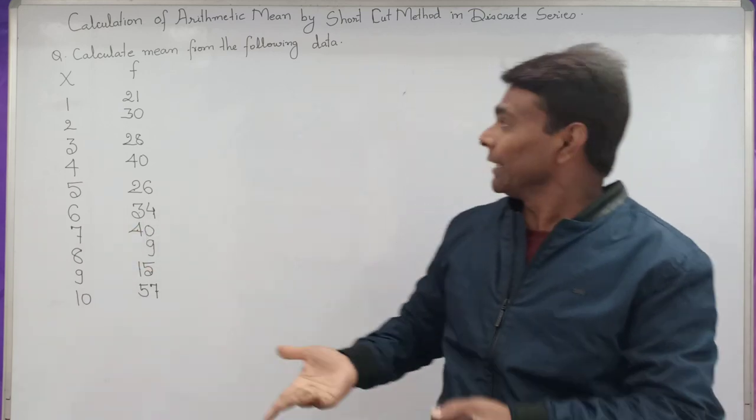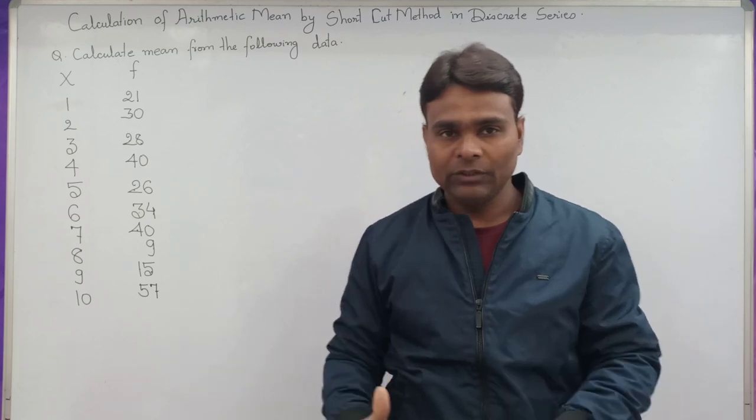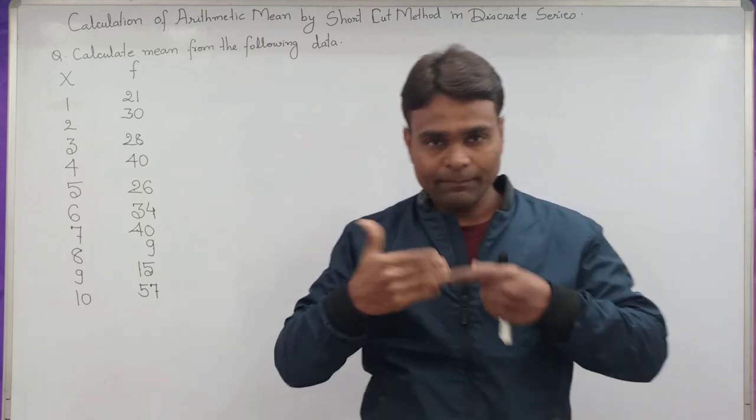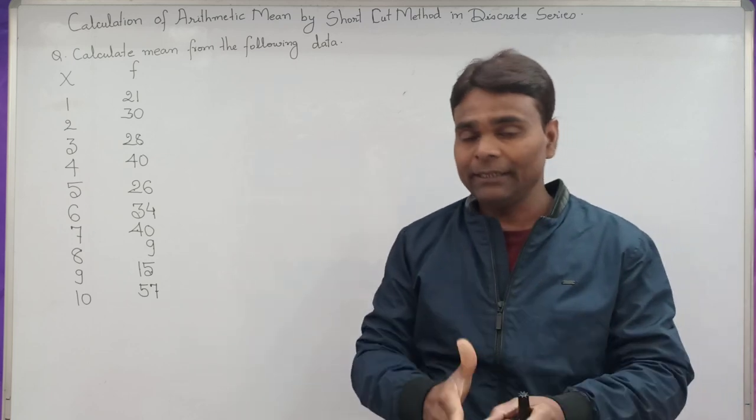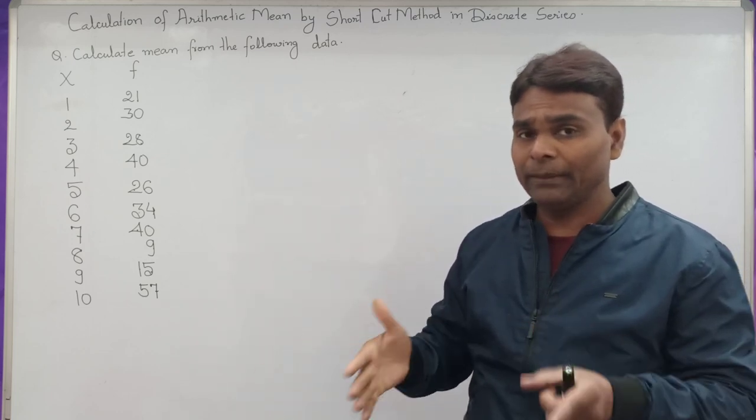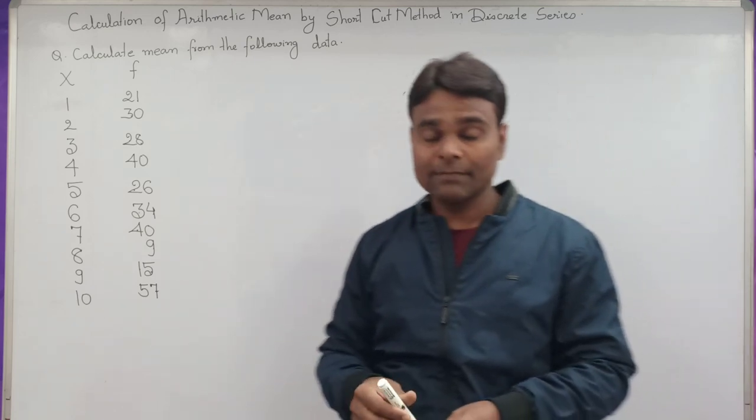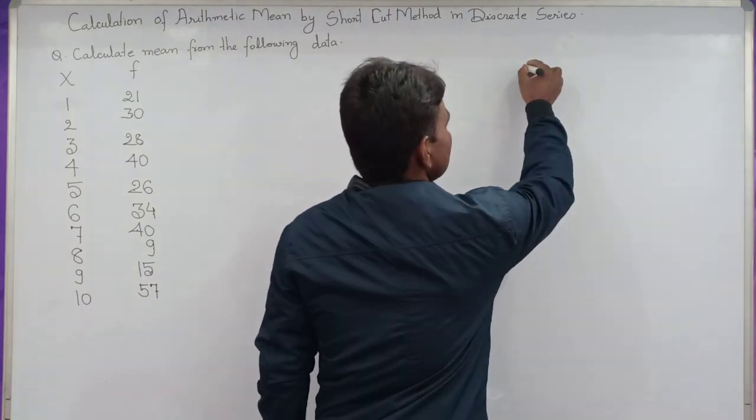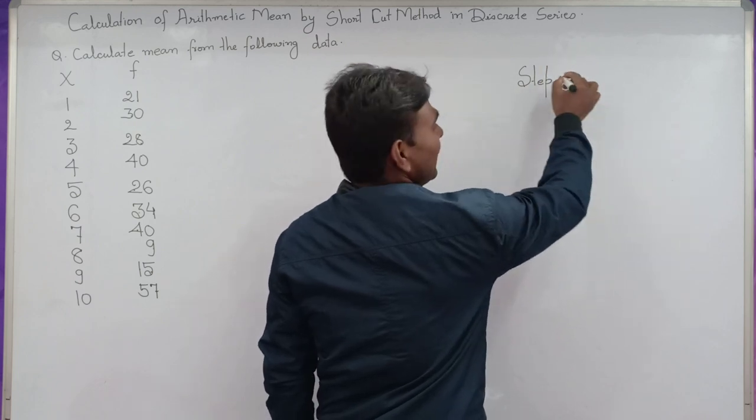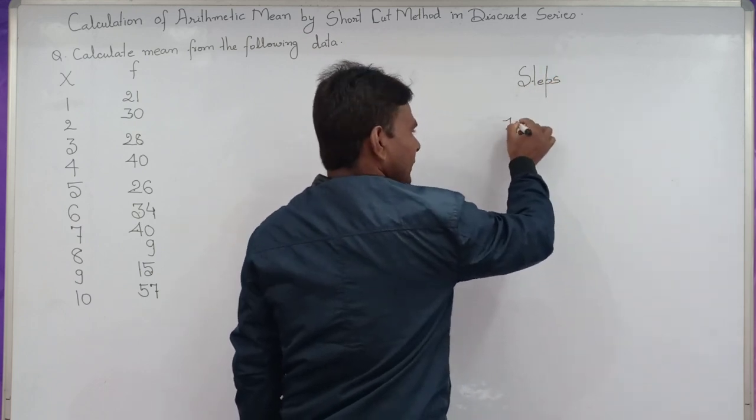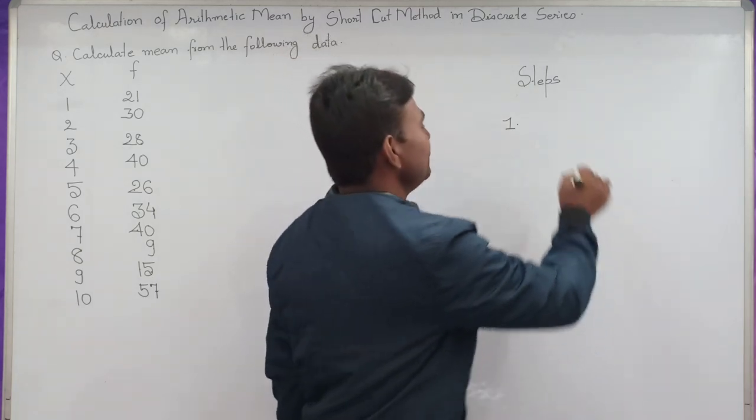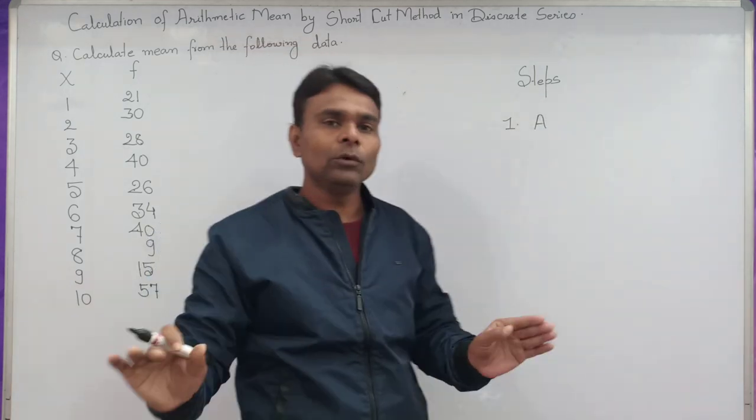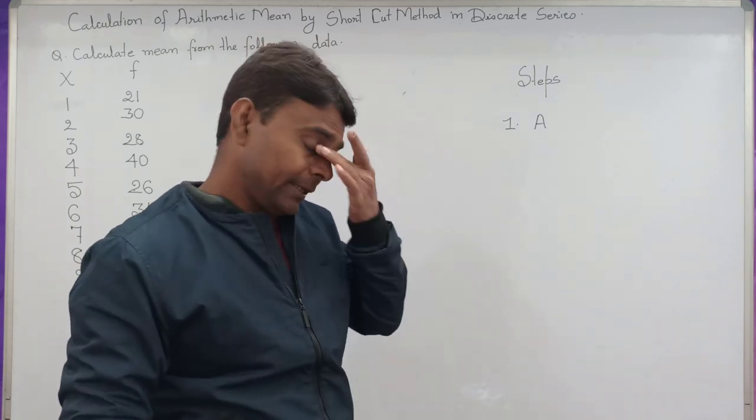The data is given here. So in this video we will learn how to calculate the mean by shortcut method. We will also learn how to calculate arithmetic mean by direct method. This method involves five steps in the calculation. First step, take any value as an assumed mean, symbolized by A. In this case we can assume the mean value.